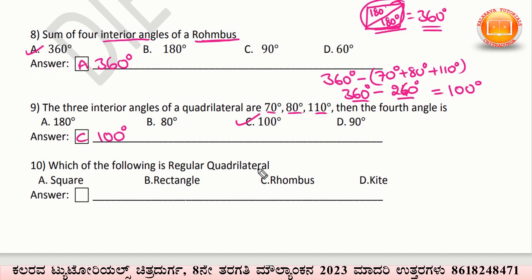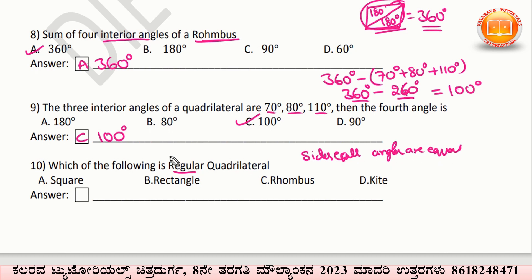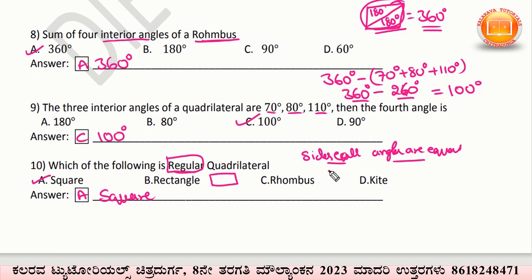Which of the following is a regular quadrilateral? A regular quadrilateral means all sides are equal and all angles are equal. In a rectangle, sides are not equal. In a rhombus, angles are not equal — all sides are equal but angles are not. In a kite, sides are not equal. A square has both sides and angles equal, so a square is the regular quadrilateral.